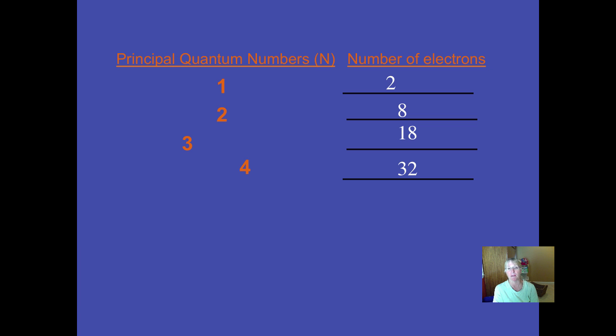And there are more than four energy levels. And as you will see, the energy level that you are in corresponds to what horizontal row the element is in on the periodic table.